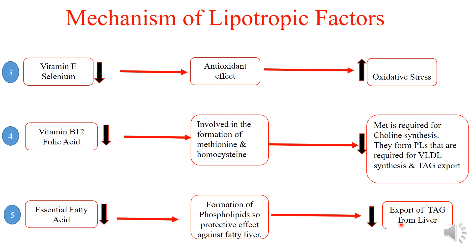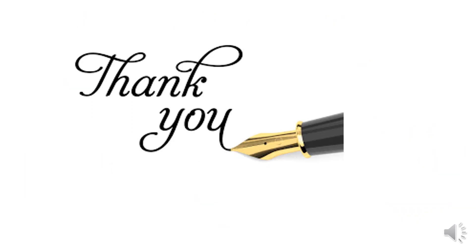All these factors, when deficient, cause fatty liver. There are different lipotropic factors, and the most important — the principal lipotropic factor — is choline. These factors are necessary for prevention of fatty liver; they protect the liver by facilitating removal of triacylglycerol through two processes: synthesis of VLDL and synthesis of phospholipids such as phosphatidylcholine, for which choline is essential.